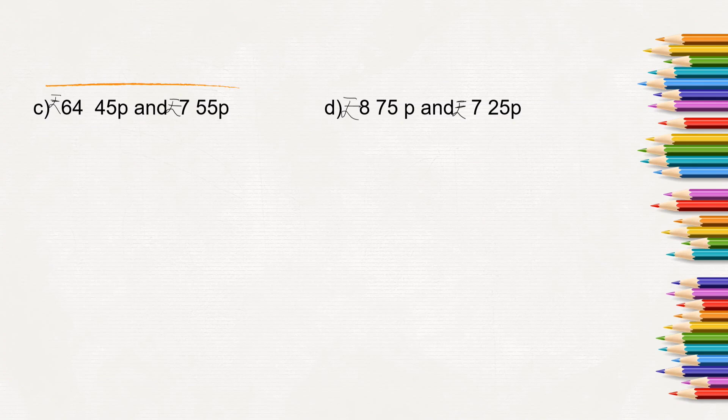Here two more questions are there. C1: Rupees 64, 45 paise and Rupees 7 and 55 paise needs to be added. So Rupees 64 and paise, in rupees place 64 and paise 45. Similarly 7 rupees, just 7 rupees. So here in 1's place and 55 in paise column. Plus 5 plus 5 is 10, so 0, 1 carry. 4 plus 1 is 5, 5 plus 5 is 10.